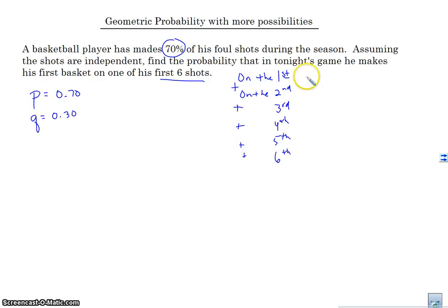So let's do the geometric, let's first do the probability that makes it on his first shot. So he makes it on the first shot, the probability of that is 70%. Okay, he just makes it.